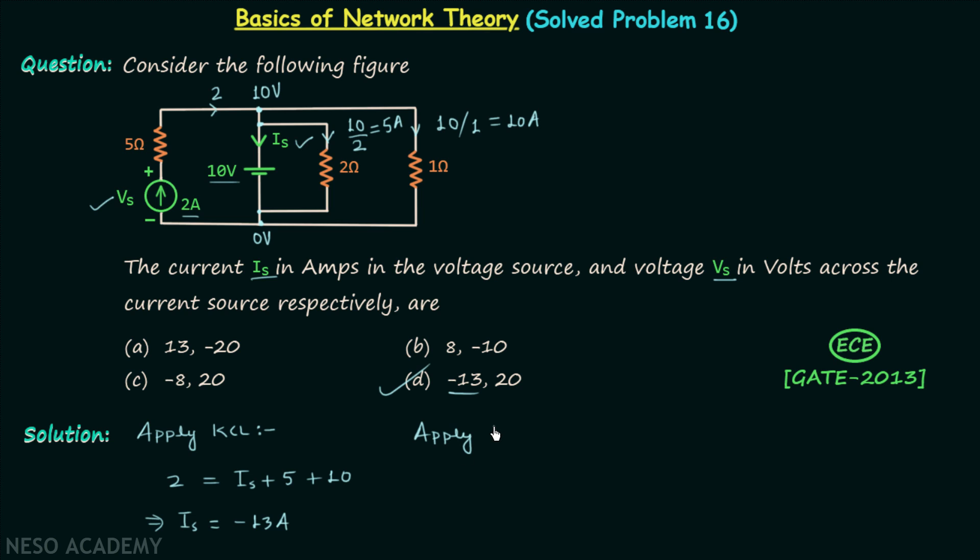We will apply KVL in the outer loop. We will have plus Vs, then we will have minus 5 multiplied by 2, then we have minus 1 multiplied by 10, and then we will equate with 0. So Vs is equal to 20 volts.